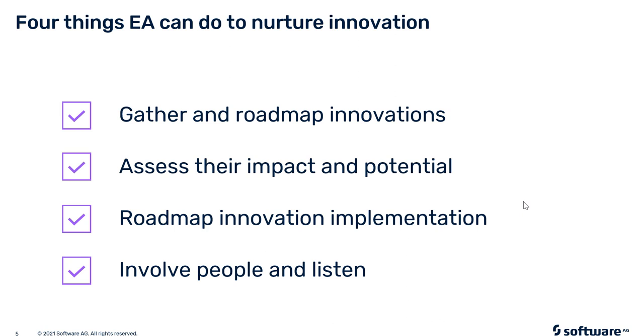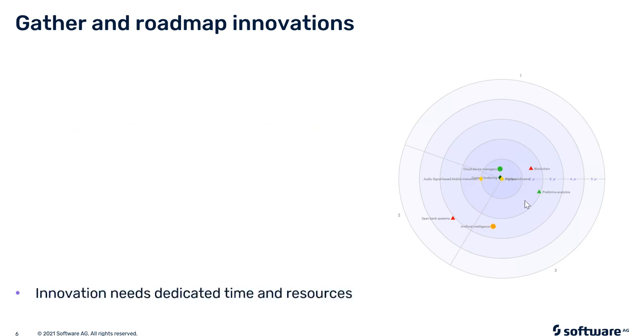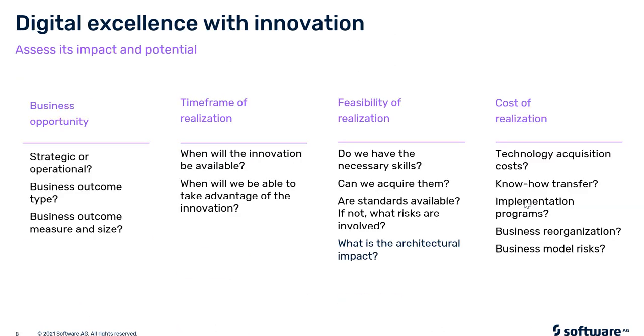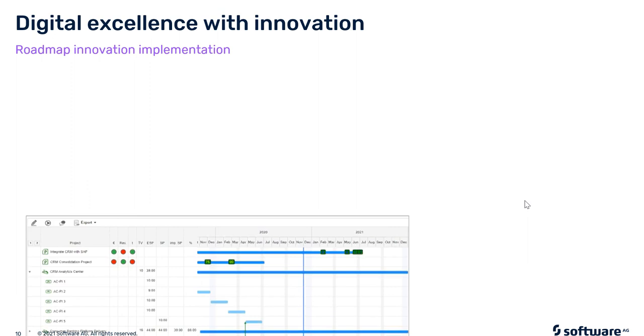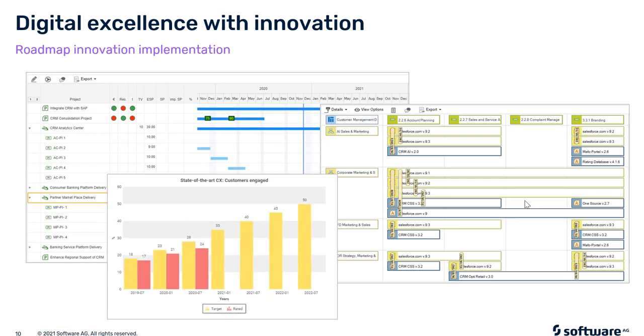The next question is specifically about slide 10: what software products were used to produce the innovation roadmap on slide 10? The innovation roadmap was produced in Alphabet — that's an Alphabet Gantt chart. All the screenshots on that slide are actually from Alphabet, and they're all configurable reports.